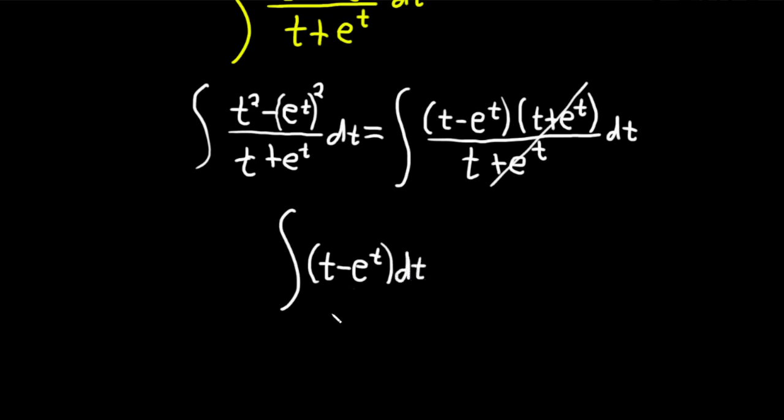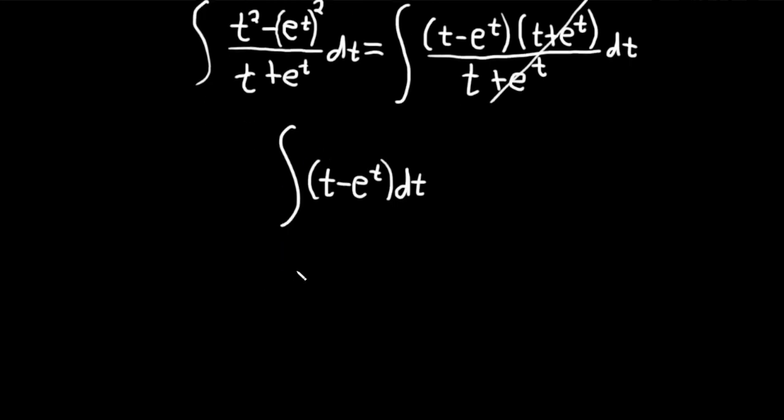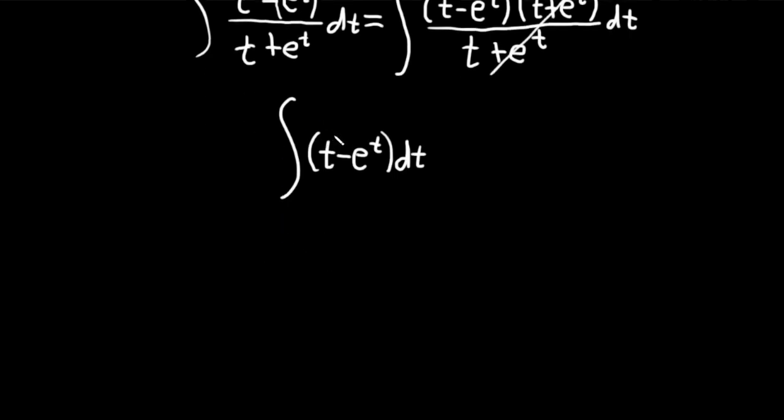And now we can integrate each of these, no problem. So when you're integrating t, it's t to the first power here. So you want to use the power rule. So you add one to the exponent and divide. Plus one is two. So we get t squared over two.